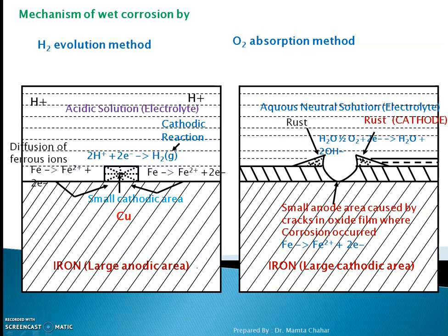In the steel tank, iron is the anode and copper is the cathode. Iron changes to Fe²⁺ ions. At the cathode, H⁺ ions gain electrons and are converted to H₂ gas. This is the hydrogen evolution method.